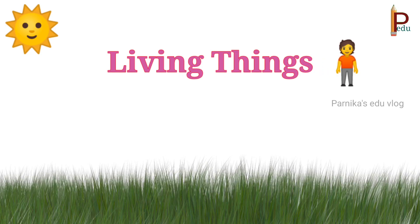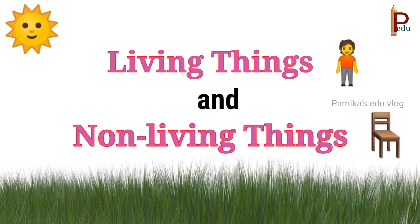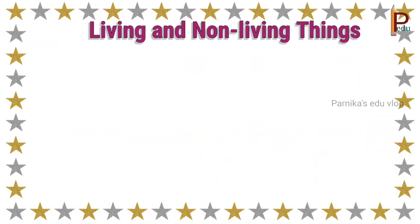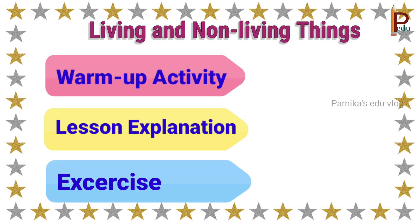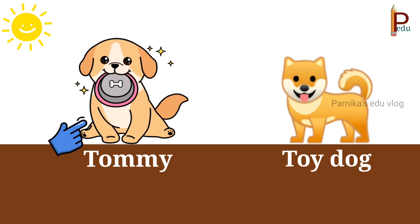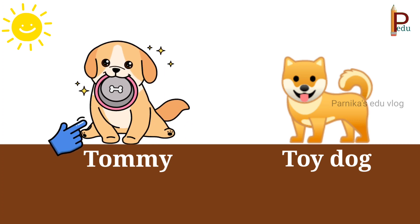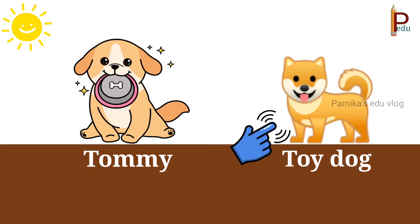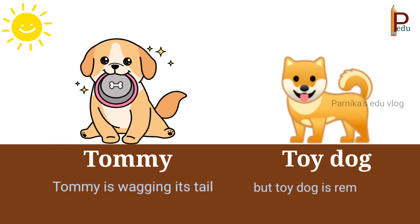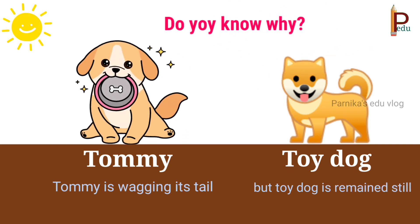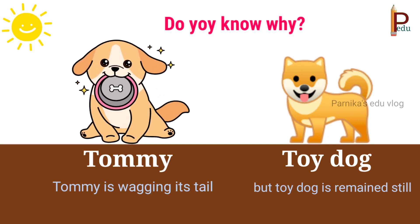Let's learn living things and non-living things in an interesting way. In this lesson, first we will do a warm-up activity, then lesson explanation, and finally an exercise. This is Tommy and this is a toy dog. Tommy is wagging its tail, but the toy dog is standing still. Do you know why? Guess the answer — after completion of this lesson, you will give the perfect answer.